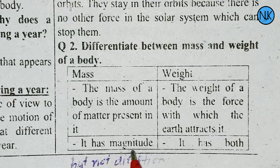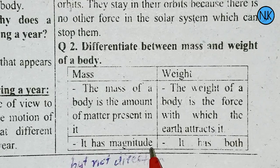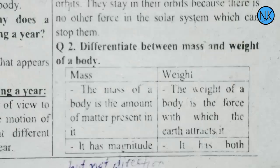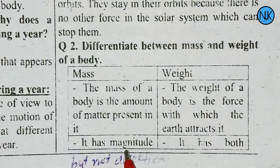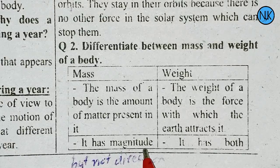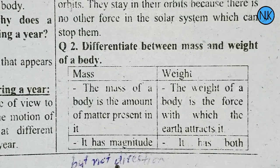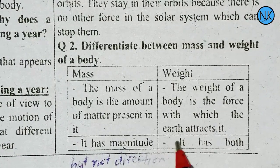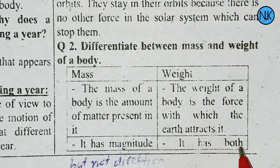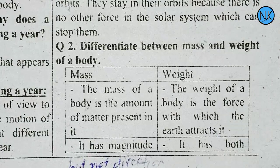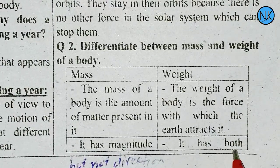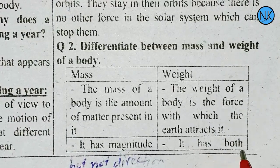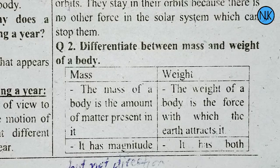Mass has magnitude but not direction — it is a scalar quantity. Weight has both magnitude and direction — it is a vector quantity.